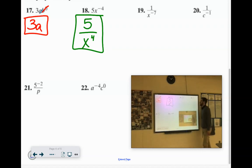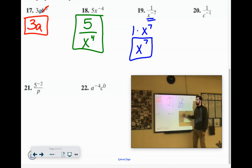Stop cruising. 1 over X to the negative 7. Do we have a negative exponent? Yeah. And it's in the denominator, which means we need to bring it up to the top and multiply it by what was up there. 1 times X to the 7th is just X to the 7th. Hey, look at us.